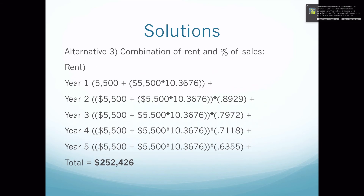On alternative 3 we're going to have to do both components. We'll do the fixed rent first, and this looks exactly like alternative 1 except we have $5,500 instead of $11,000. It should be about half, and that's what it is: $252,426.